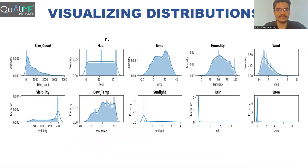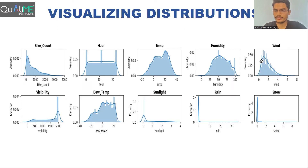After that, we started visualizing the distributions of all the features. This is how the distribution of bike count looks, and this is the distribution for the hour column. For temperature, humidity, and wind, these are all close to normal distribution — almost showing a bell-shaped curve, though slightly skewed to the right. Visibility and dew point are also shown. Rainfall and snowfall seem to have many outliers and are very much pointed.